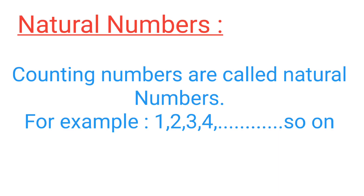The first definition is of natural numbers. Natural numbers are counting numbers. When we count any things, we start from 1: 1, 2, 3, 4, 5, 6 — and so on. So all counting numbers are called natural numbers. We start counting natural numbers from 1.